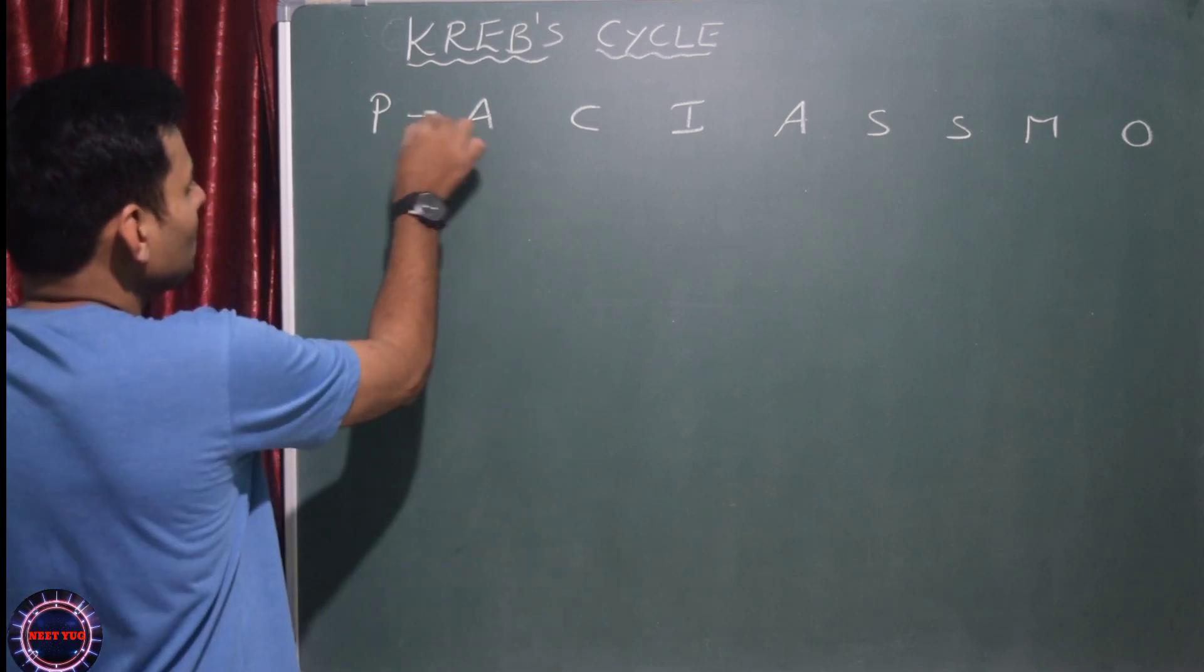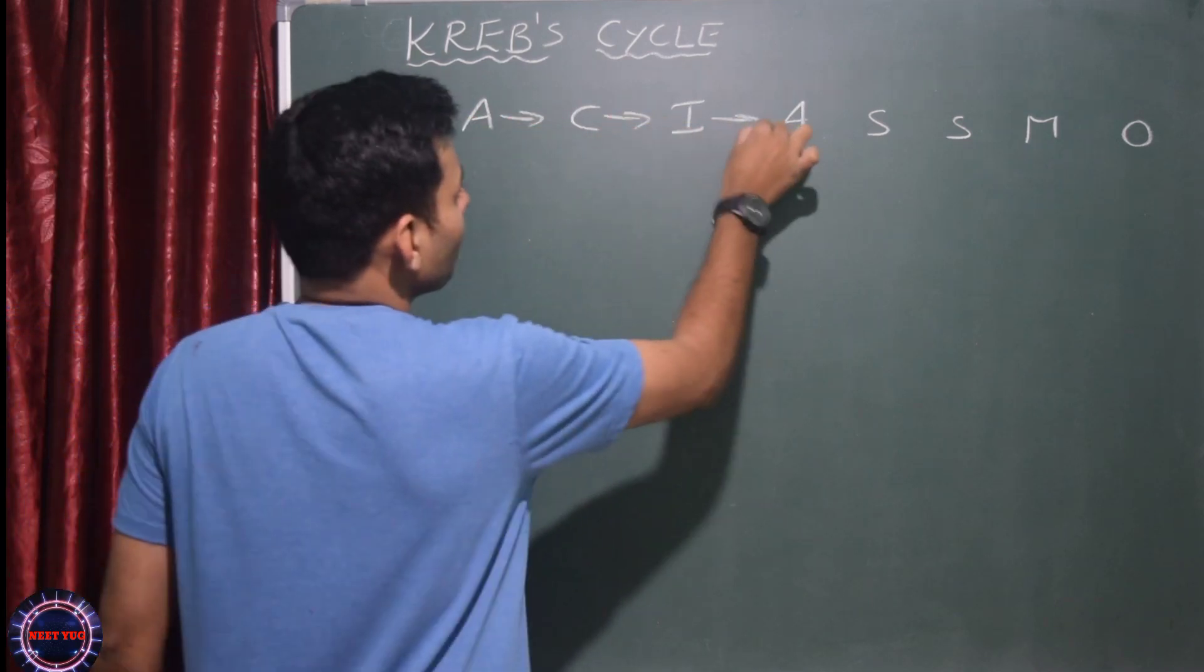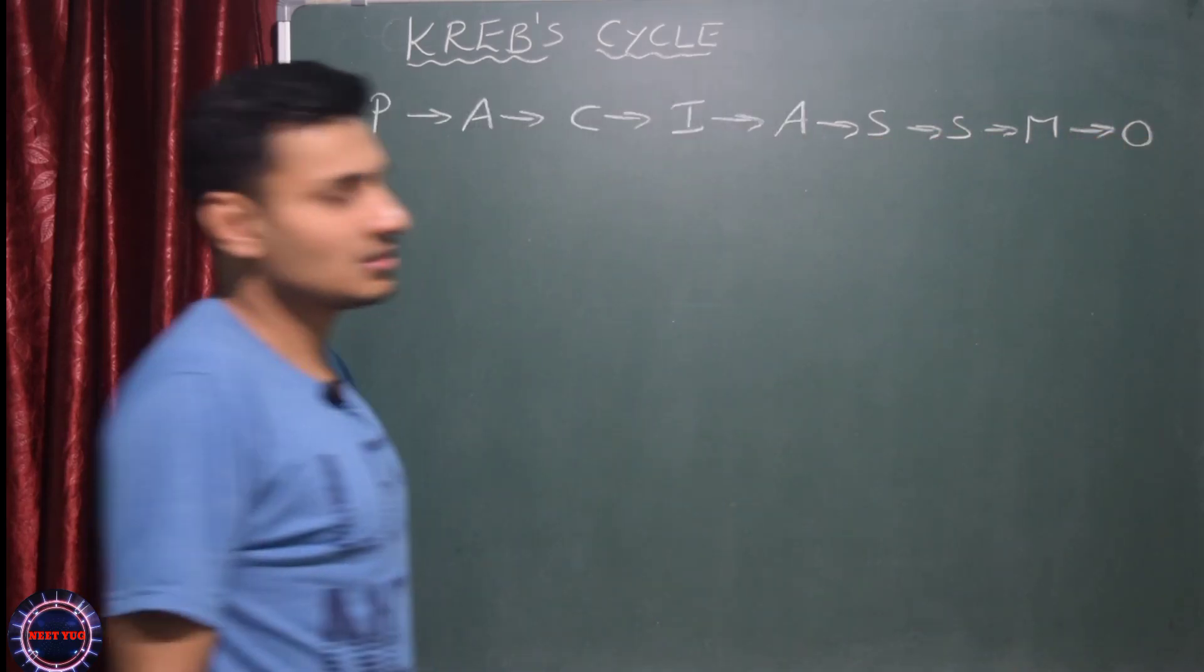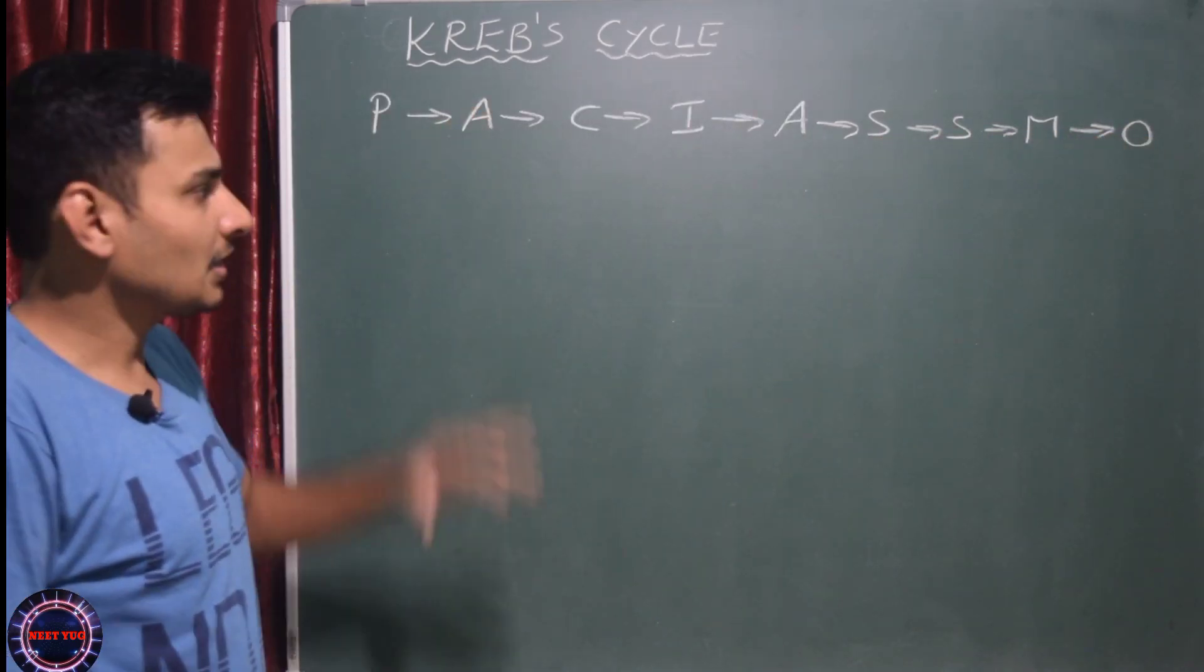PACHIASMO is the code. So P then A then one arrow mark - each one, this is the order. This is the order actually of the Krebs cycle.